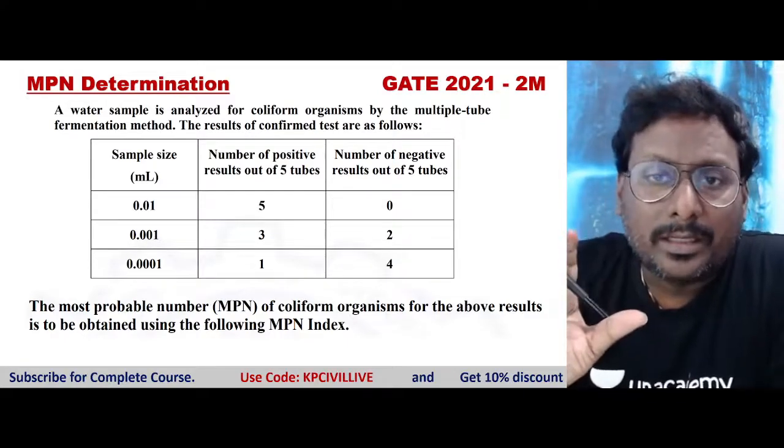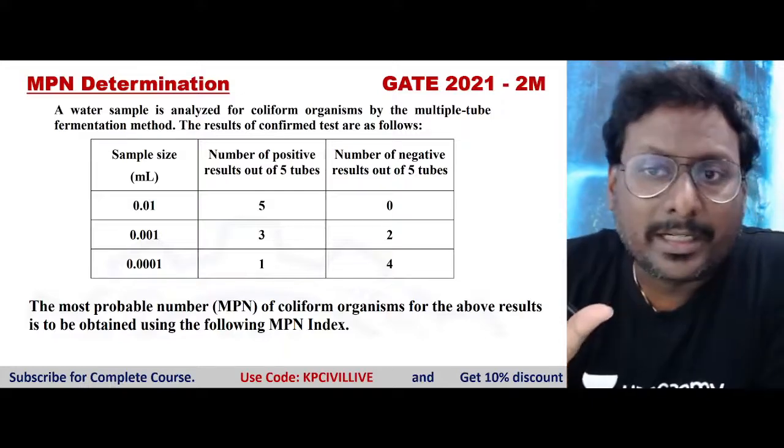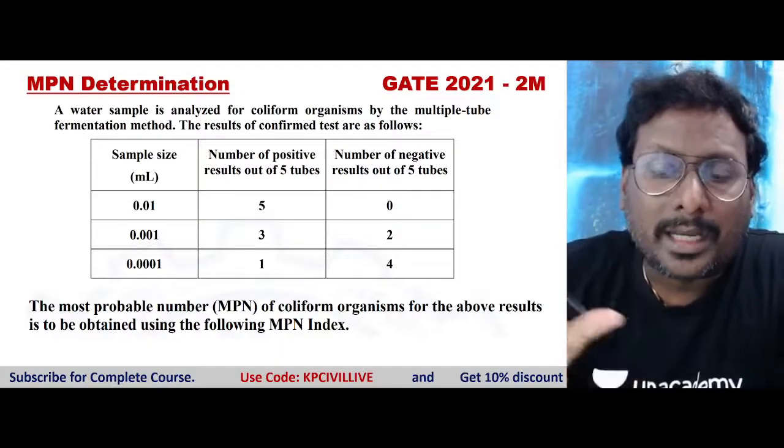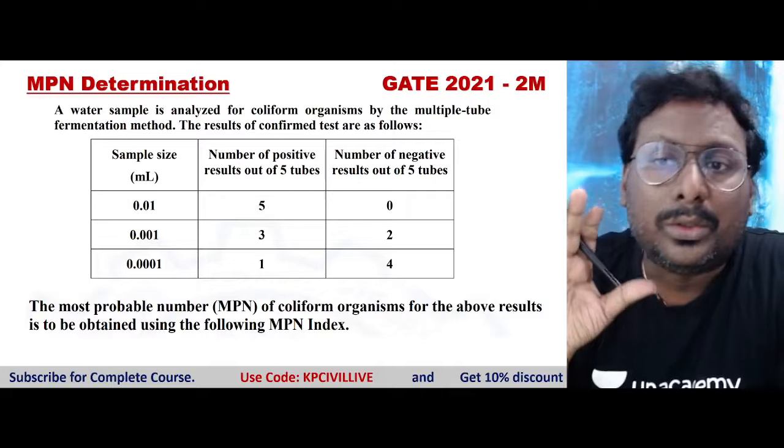So when an MPN question is given, so much theory and tables are provided. Don't go through the entire theory, first go through the tables.